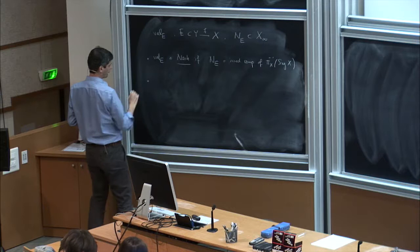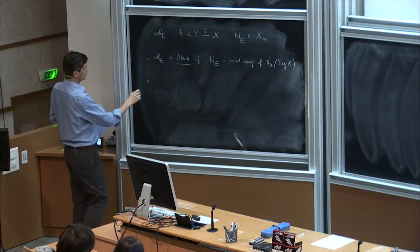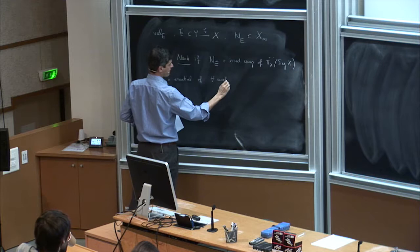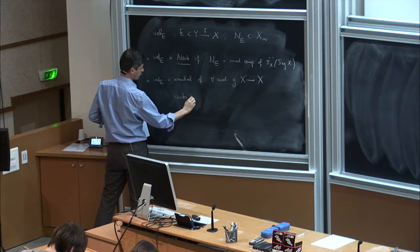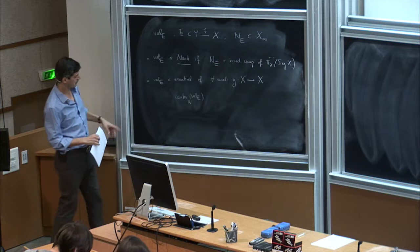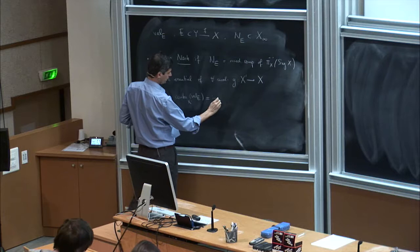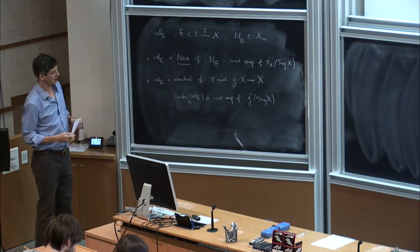Following the Nash problem, we want to understand this in terms of resolution of singularities. We say an evaluation is essential if for every resolution G of X, the center of the valuation — the image of E on the model X prime — is an irreducible component of the inverse image of the singular locus on the resolution X prime. And this needs to be checked for all resolutions.